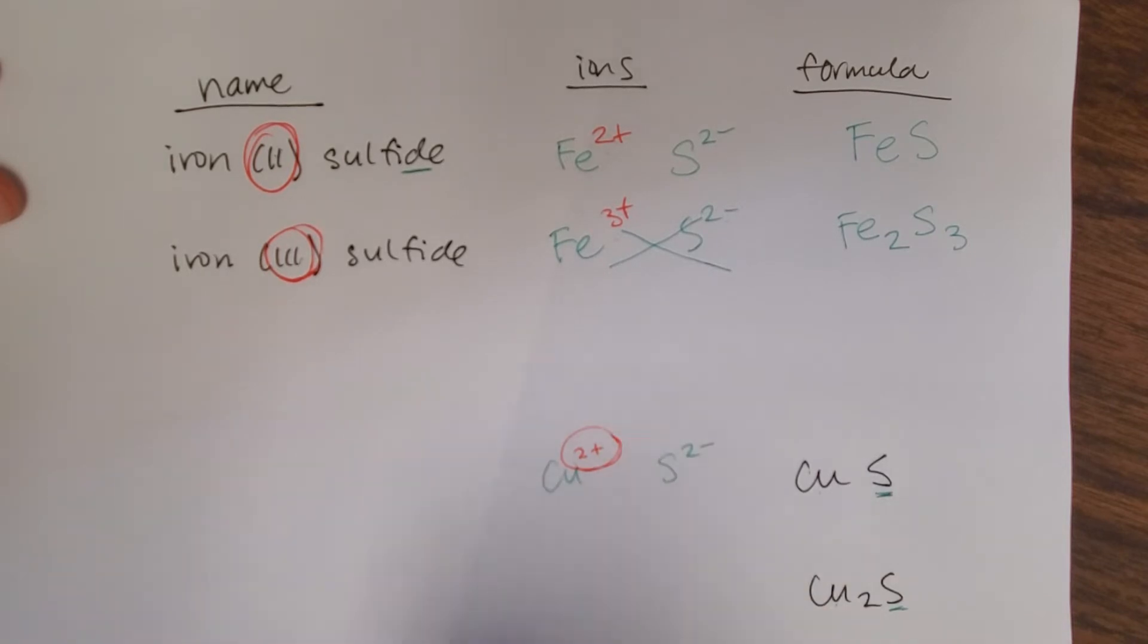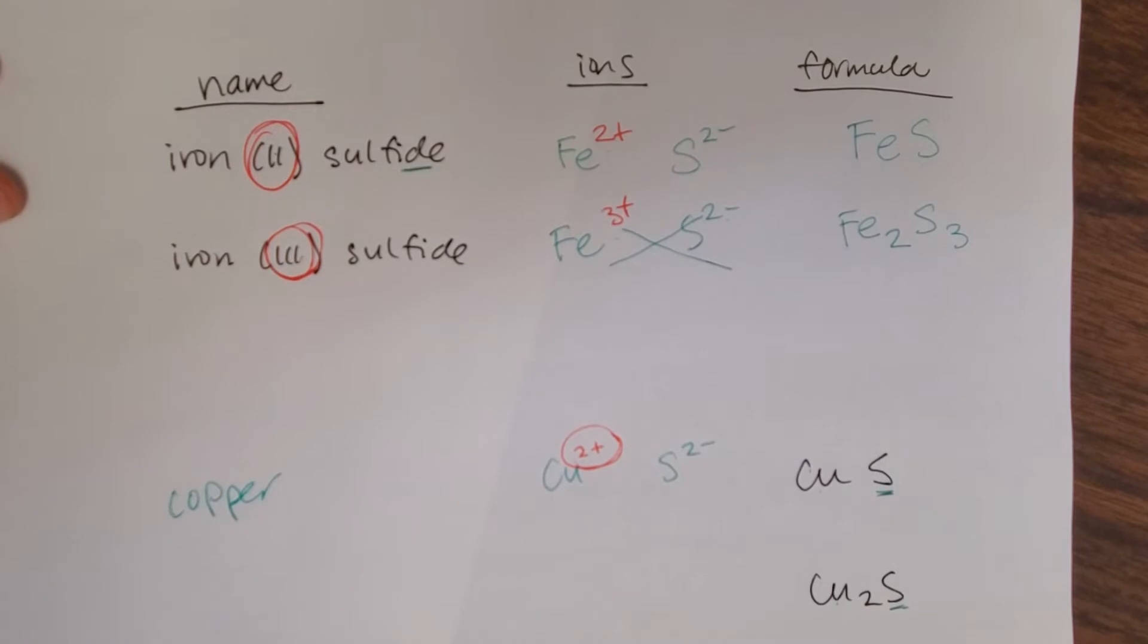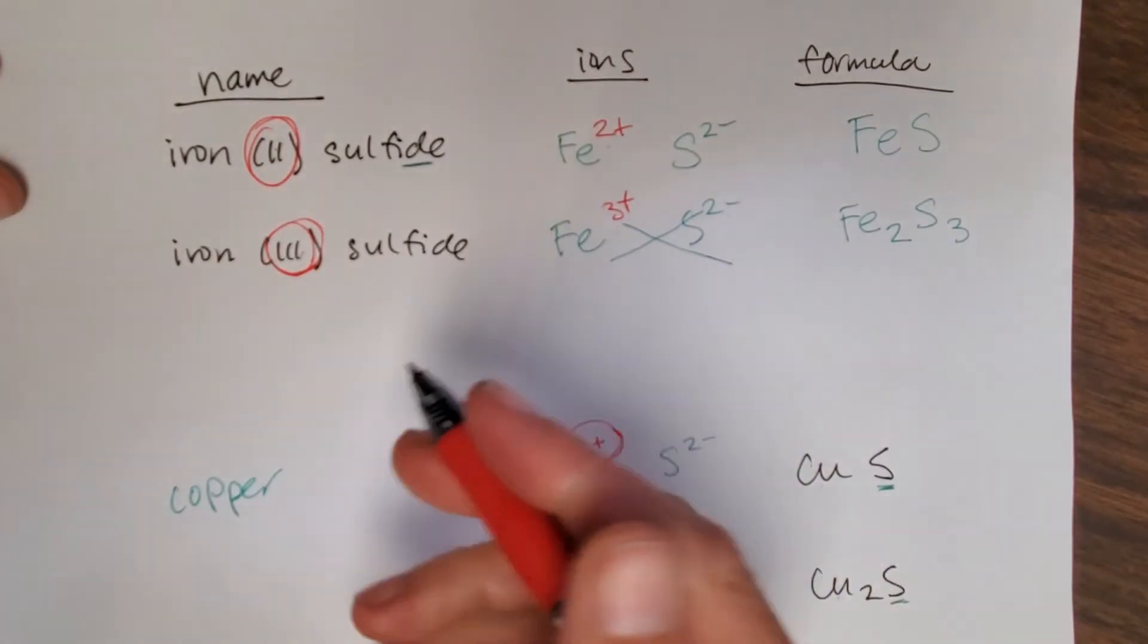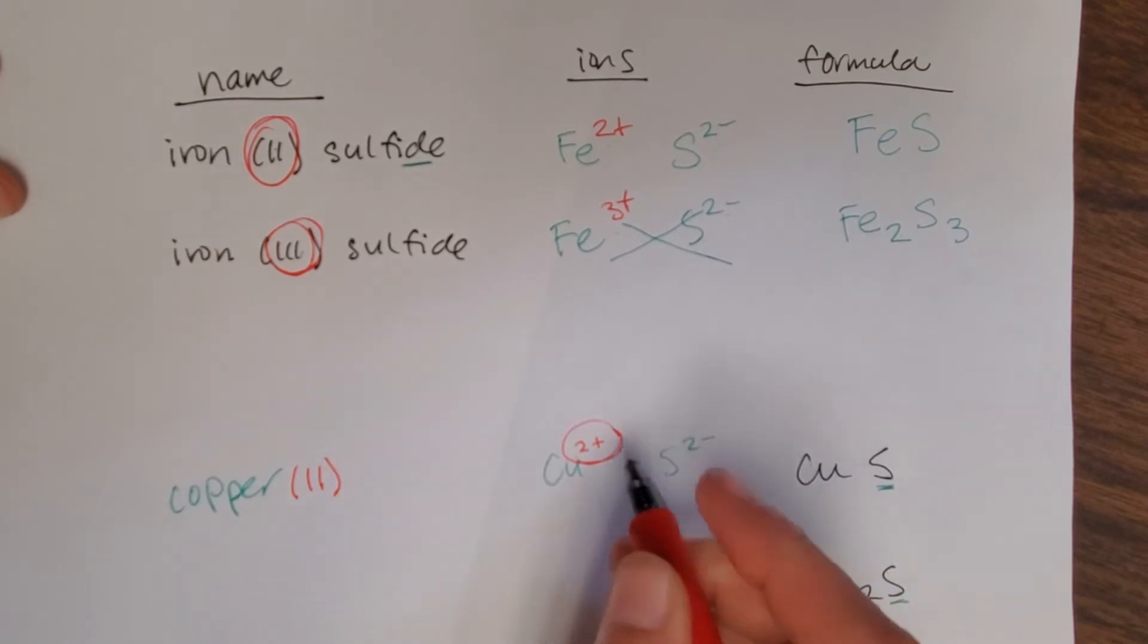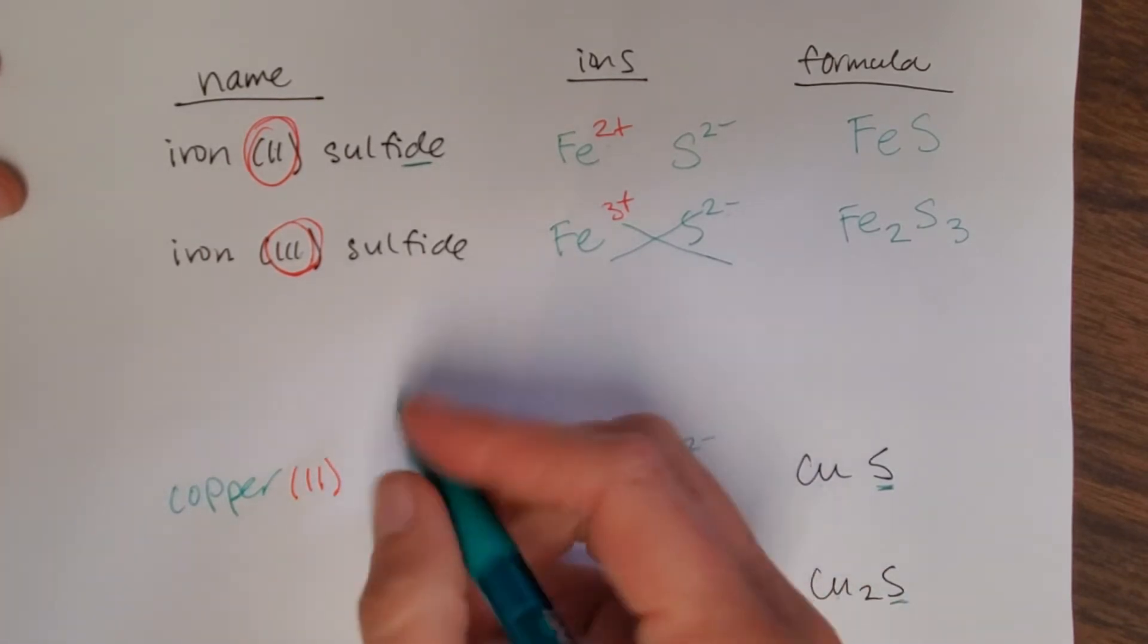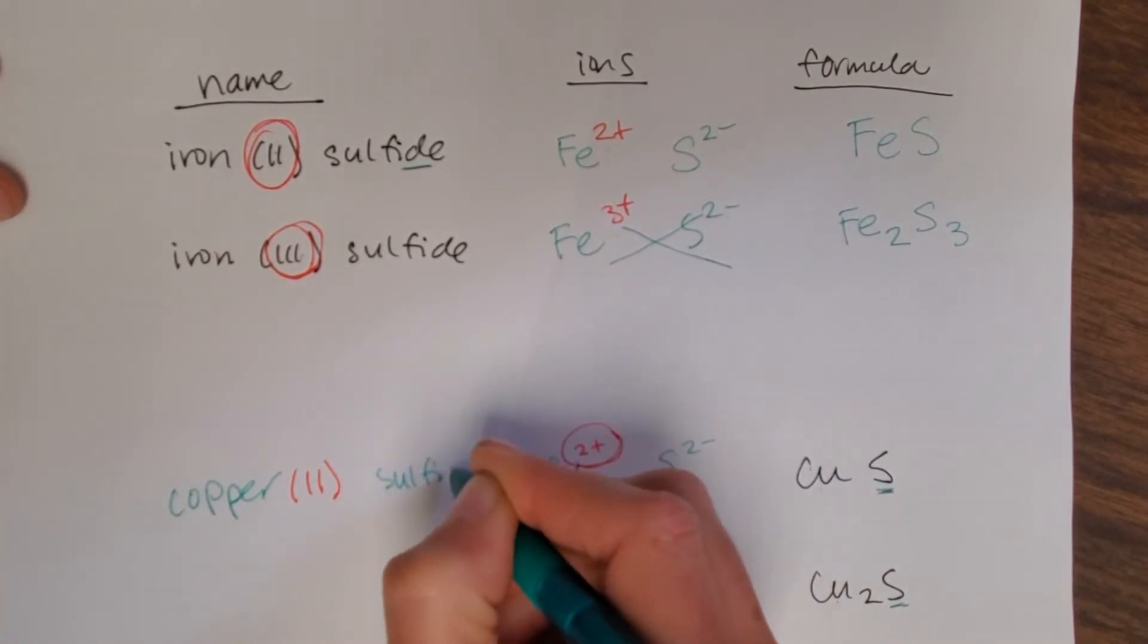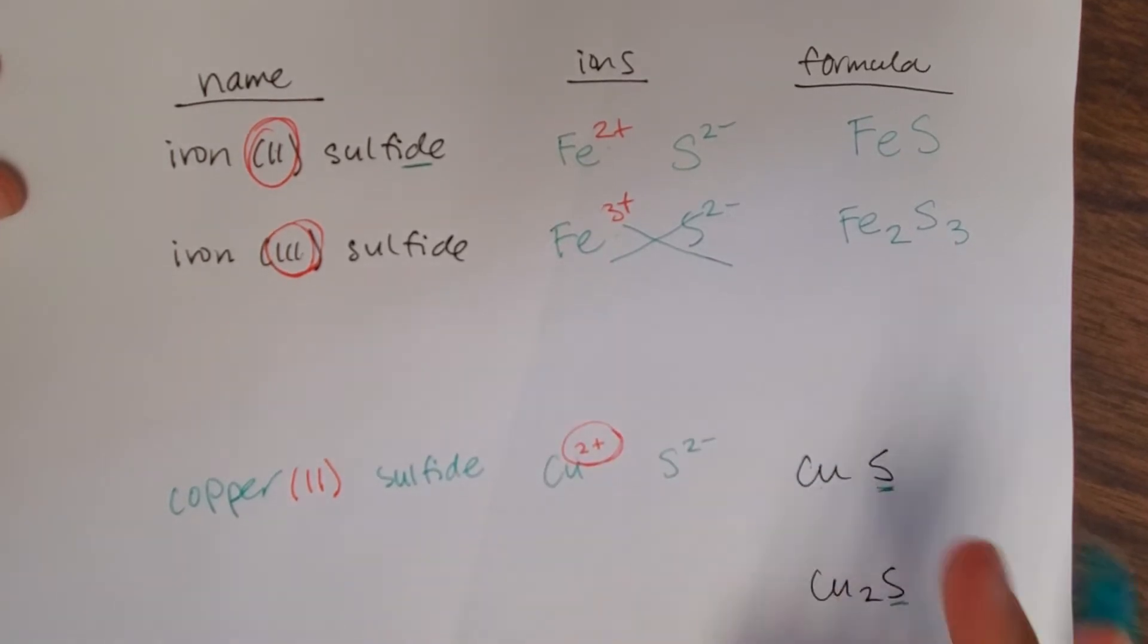When I go to write the name then, I'm going to write copper, and then that charge becomes the Roman numeral, so it's (II), and then I write sulfide again, sulfide because it's just the sulfur by itself.